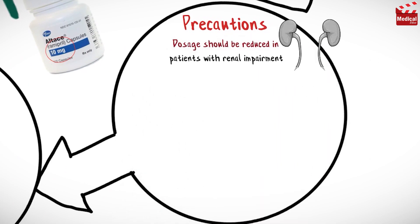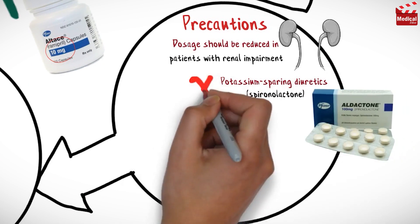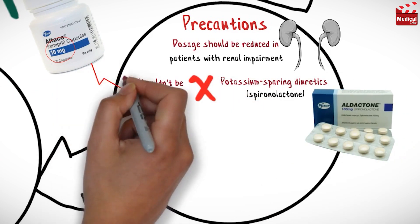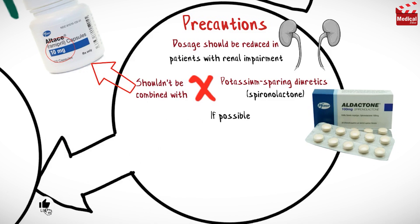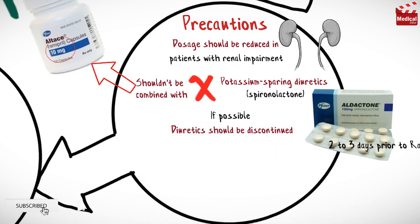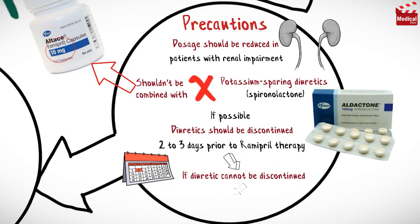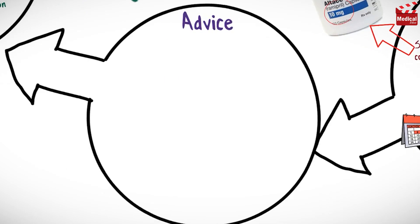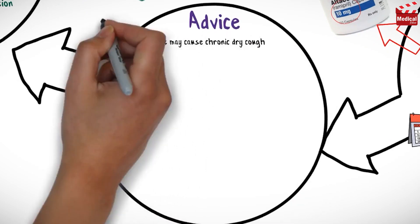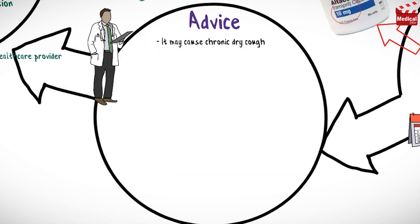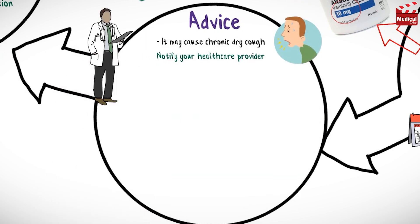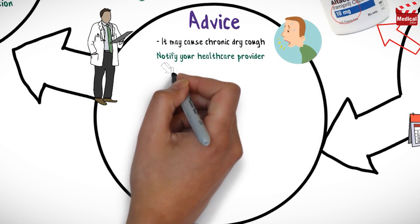Remipril dosage should be reduced in patients with renal impairment. Potassium-sparing diuretics such as spironolactone shouldn't be combined with remipril if possible. Diuretics should be discontinued two to three days prior to remipril therapy, and if the diuretic cannot be discontinued, dose reduction of remipril is required. This drug may cause chronic dry cough, so notify your healthcare provider if cough becomes bothersome.